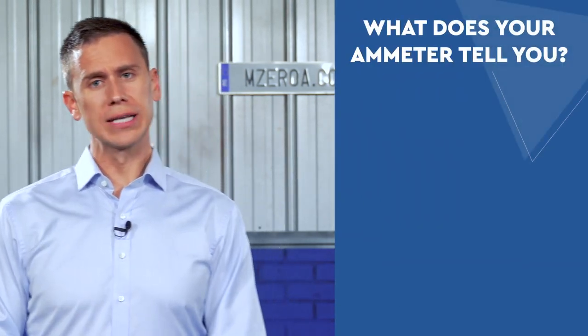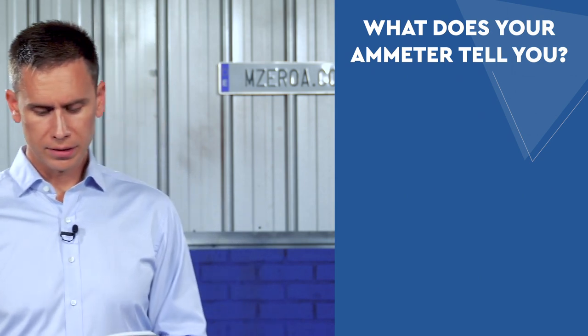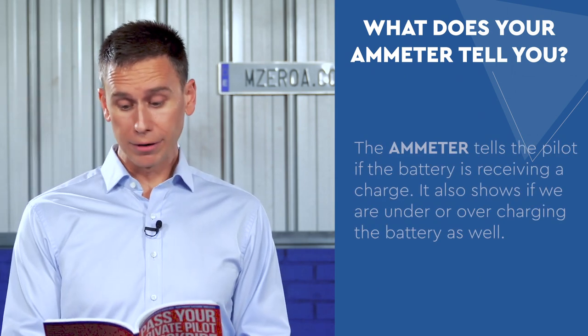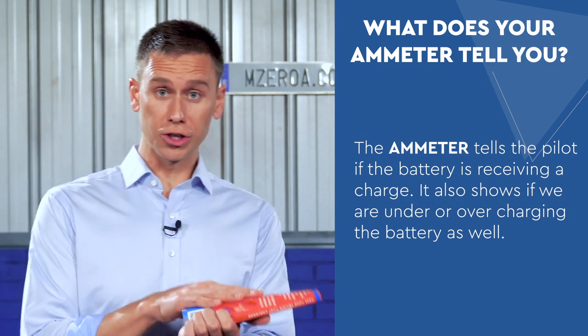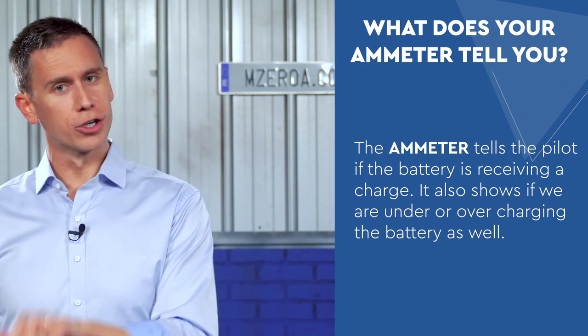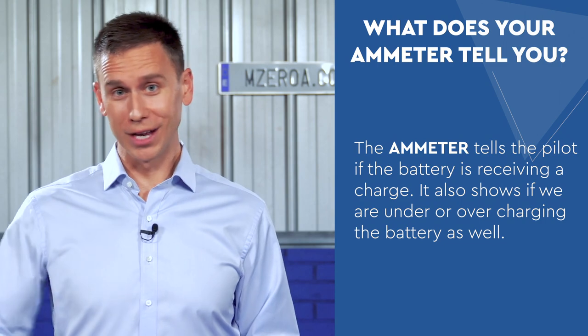Are you following me? Let's do one more here for fun. What does your ammeter tell you? It tells you if your battery is receiving a charge — or possibly an undercharge or an overcharge as well. The follow-up question is: what does a voltage regulator do? Do you see how these checkrides work? I'm jumping around questions, but they're going to follow a theme.